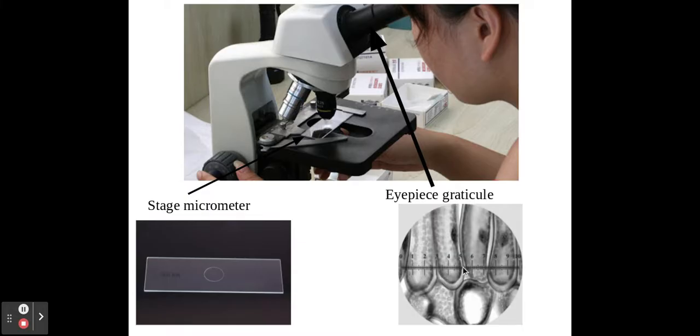We also need to use, once we've counted how many eyepiece lines my specimen is, we also need to use a stage micrometer. So we take the specimen off, we put the stage micrometer on, and this allows us to calibrate the eyepiece graticule so that we know exactly how much each one of these little pieces on my eyepiece graticule actually is.